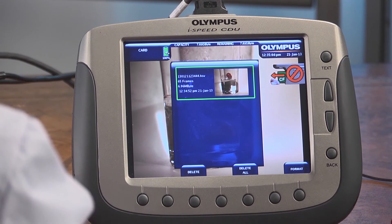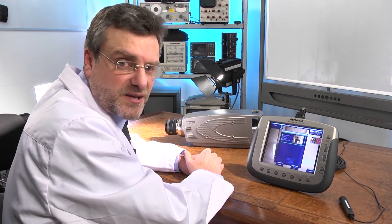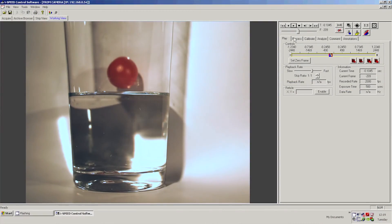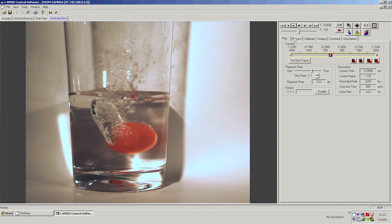Now I can take the card out of the camera. I can use that card in a laptop or PC and I can use the Olympus iSpeed software or the Olympus iSpeed 3 viewer to playback my video footage.